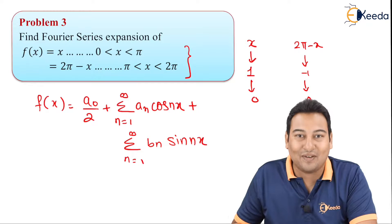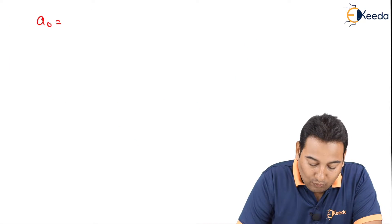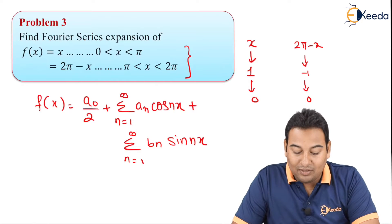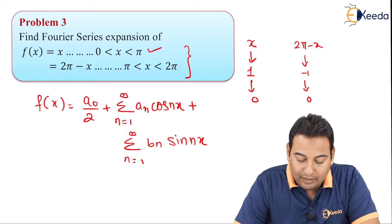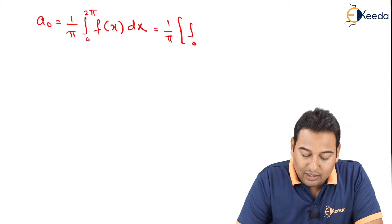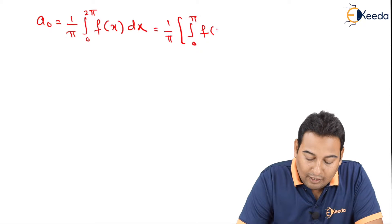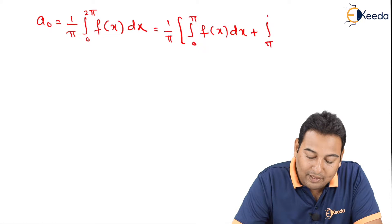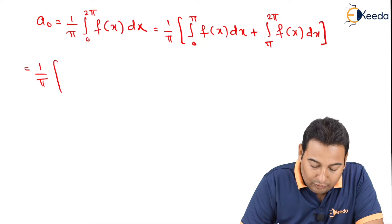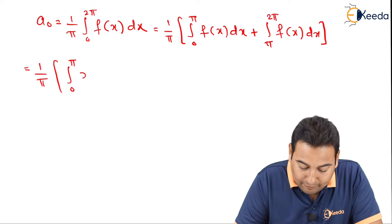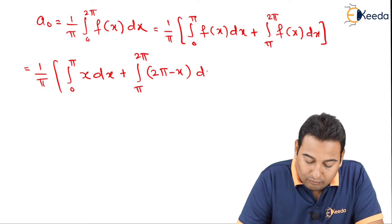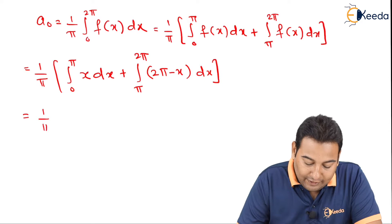Let's find a₀. The formula is a₀ = (1/π) ∫₀²π f(x) dx. The problem is divided into two intervals: 0 to π and π to 2π. Therefore we split the integration into two parts: (1/π)[∫₀π f(x) dx + ∫π²π f(x) dx]. Substituting: from 0 to π, f(x) = x, and from π to 2π, f(x) = 2π - x.